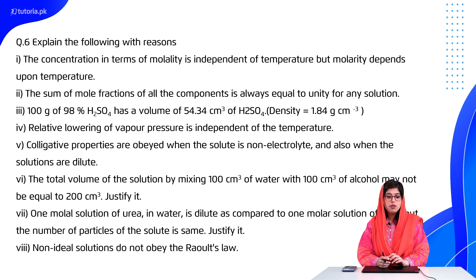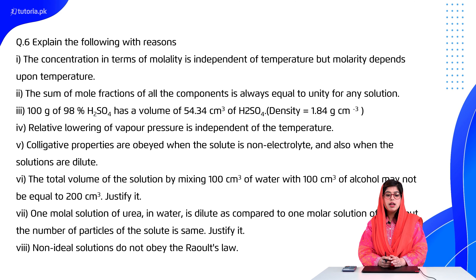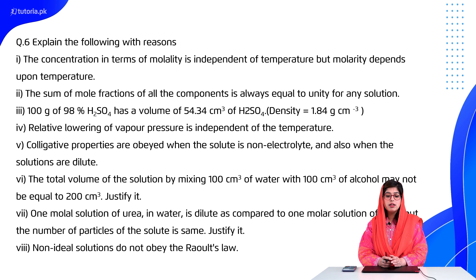Students, you have to work with 100 grams of 98% H2SO4, which has a volume of 54.34 cm³. We want to prove that 100 grams of 98% sulfuric acid has a volume of about 54.34 cm³. Students, you have the density given in grams per cm³.